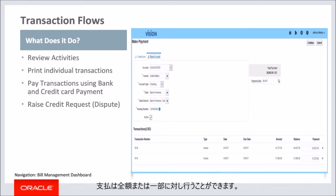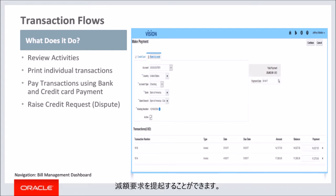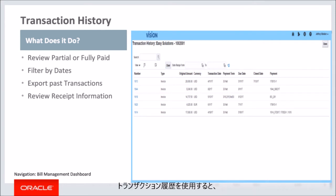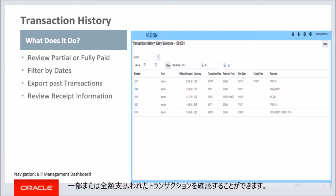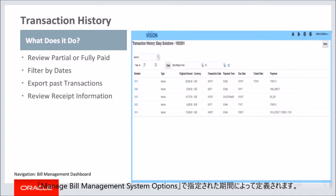Payments can be made in full or for a partial amount. Credit card payments require tokenization to be enabled in Oracle Fusion Payments. Users can raise a request for credit by choosing to dispute specific sections of the invoice for an amount or percent value. Using transaction history, users can review partially or fully paid transactions for a single account or for all accounts they are registered with. Transactions can be filtered by transaction date, due date, or apply date. Users can also review all the receipt numbers applied against a transaction. The period of transaction history presented is defined by the period specified in the Manage Bill Management System Options.